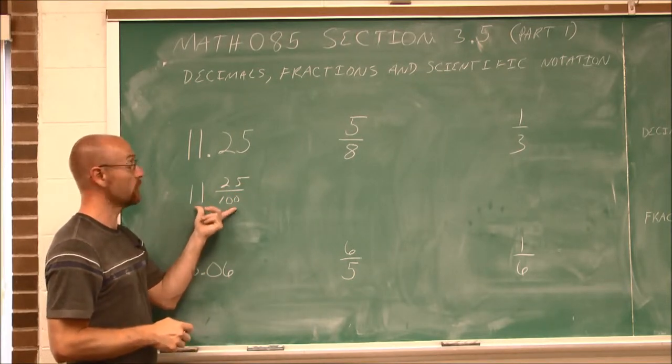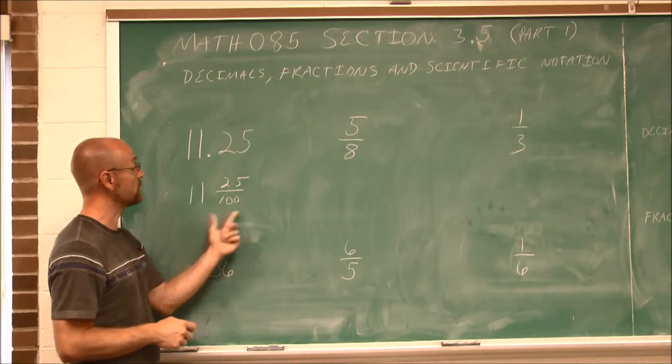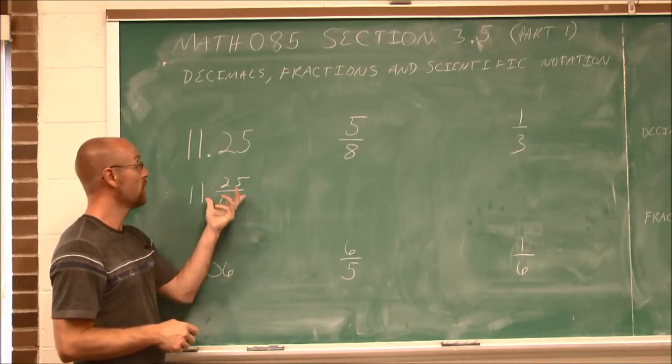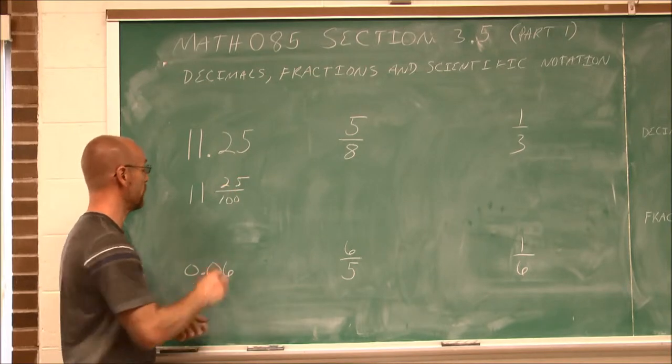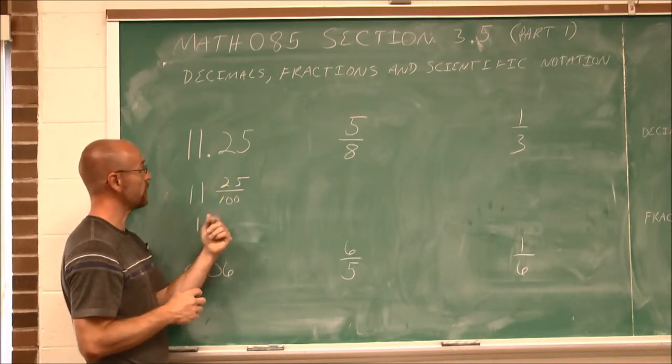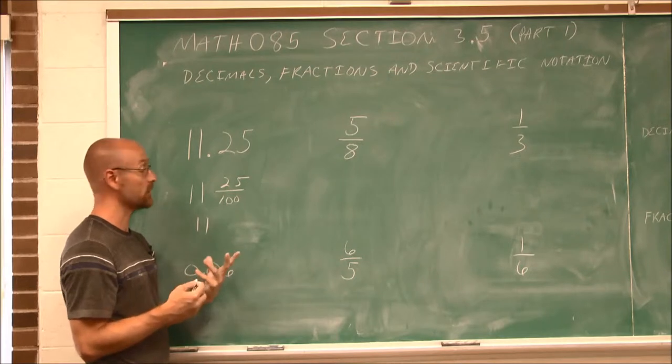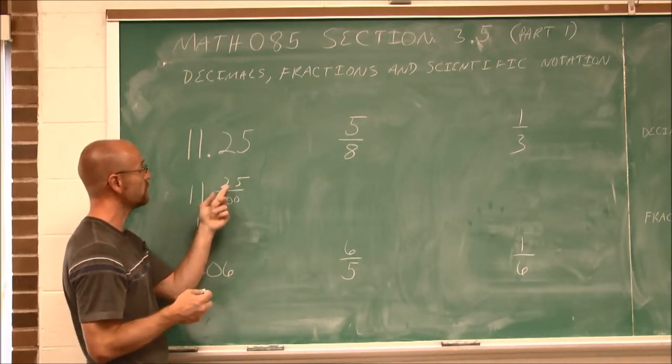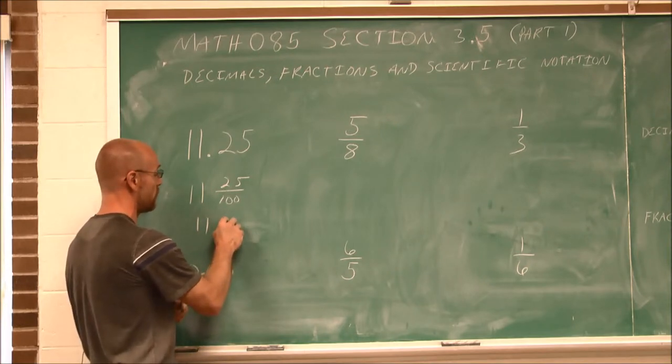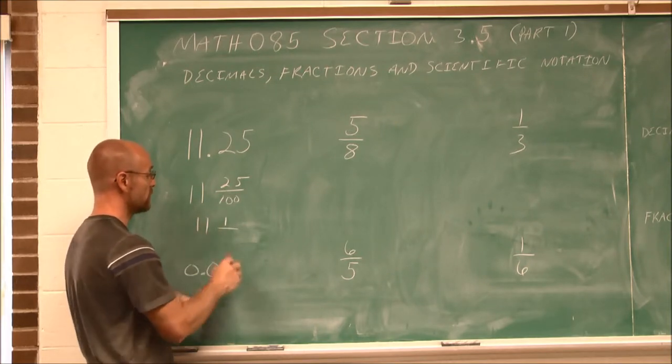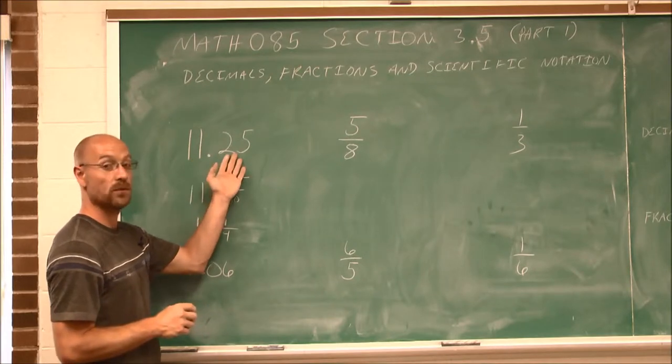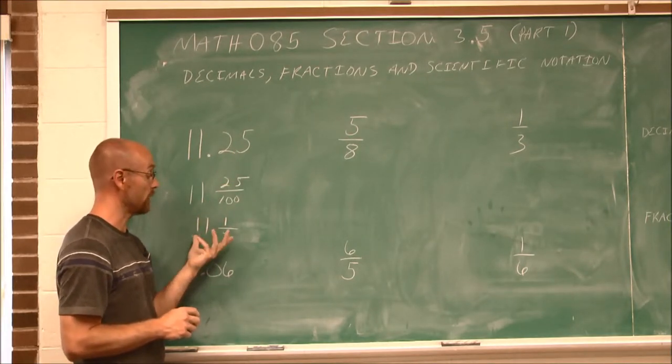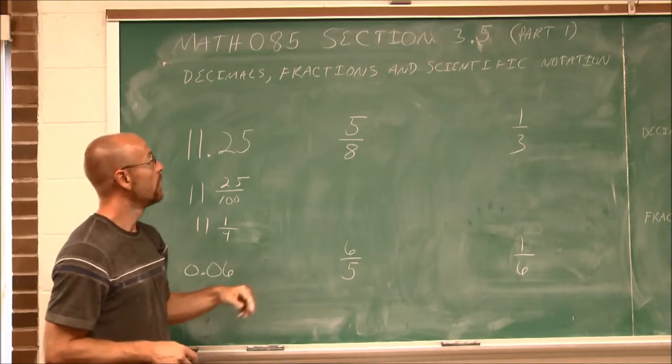I've converted this to a mixed number, 11 and 25 one hundredths. But with any fraction, we want to reduce this value. 25 over 100, they both contain a factor of 25. 25 goes into 25 once, and 25 goes into 100 four times. So 11.25 is the same thing as 11 and 1 fourth.